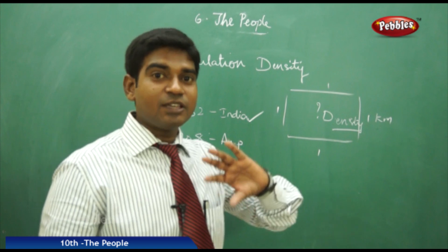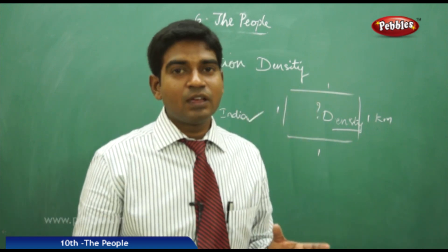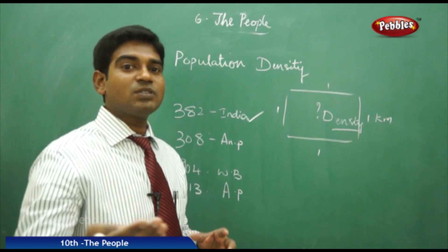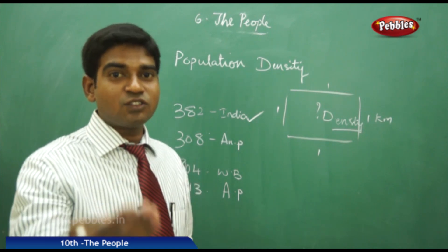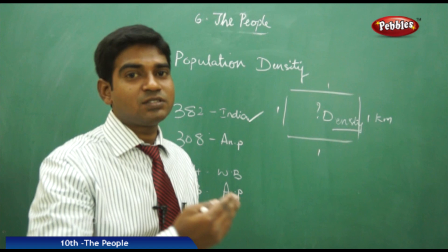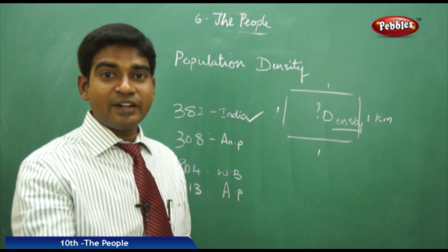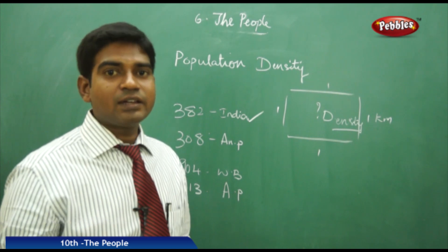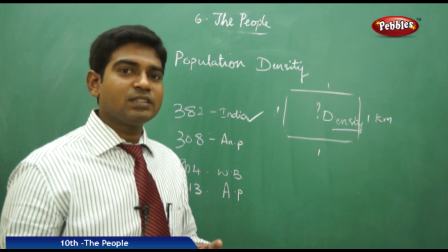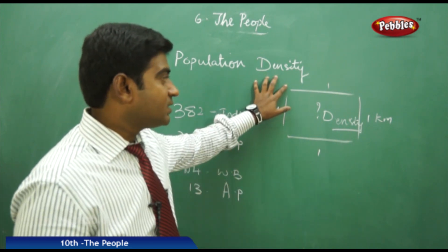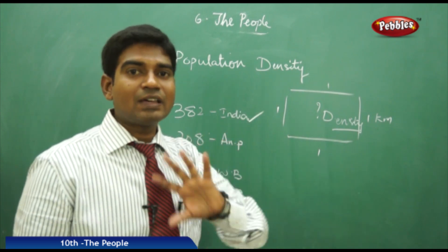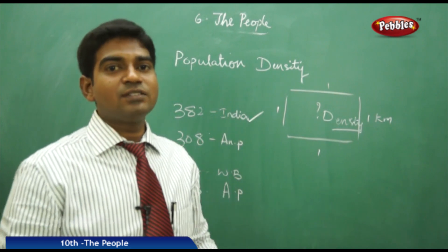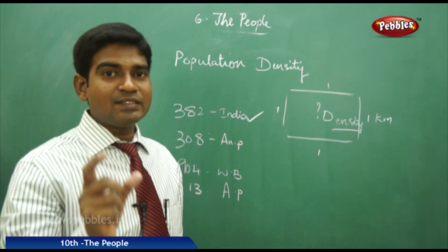Even within our state, density varies across regions — for example, Krishna district may have more density compared to Adilabad or Anantapur districts. Similarly, Delhi has higher density compared to other regions of the nation. We cannot estimate that all over India the density per square kilometer is the same.